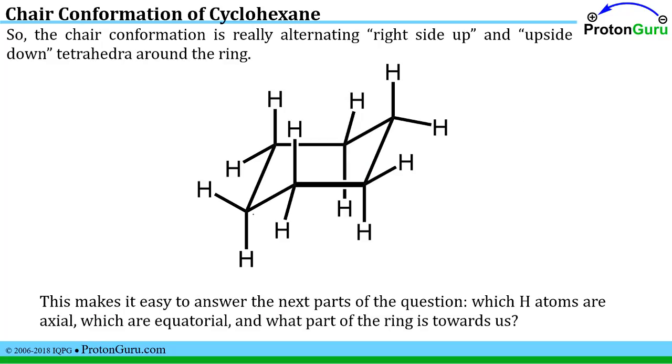And at that point we can really draw the chair cyclohexane with all of its hydrogens in. It's really an alternating set of right side up tetrahedra, upside down tetrahedron, right side up tetrahedron,